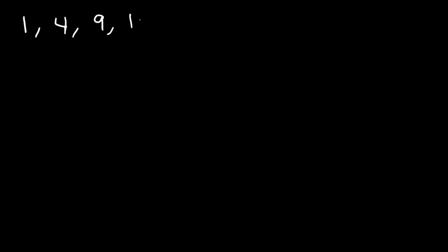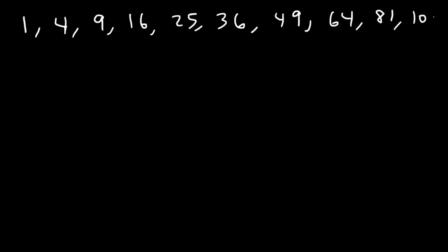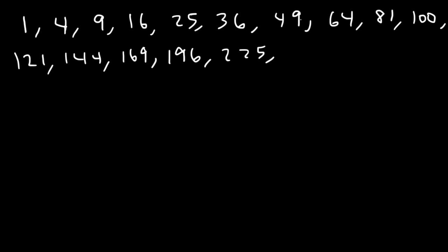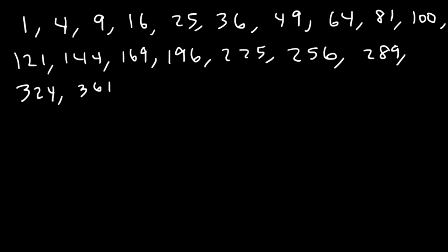Now let's talk about simplifying square roots. You need to know the perfect squares: 1, 4, 9, 16, 25, 36, 49, 64, 81, 100, 121, 144, 169, 196, 225, 256, 289, 324, 361, 400. Make sure you know up to 20 squared, which is 400.